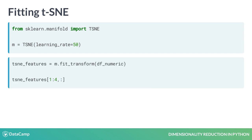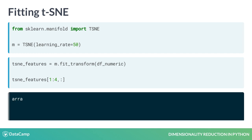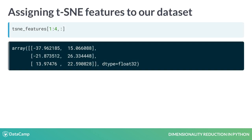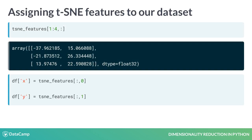Next, we'll fit and transform the TSNE model to our numeric dataset. This will project our high-dimensional dataset onto a NumPy array with two dimensions. We'll assign these two dimensions back to our original dataset, naming them X and Y.